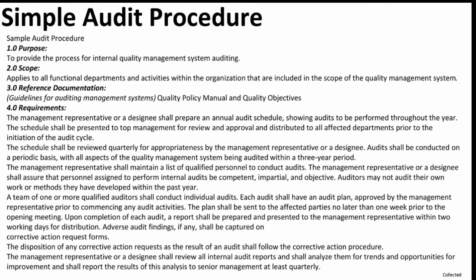This is a simple audit procedure. Its purpose is to provide the process for internal quality management system auditing. The scope is applied to all functional departments and activities within the organization that are included in the scope of the quality management system. References include the guideline for auditing management systems, the quality policy manual, and quality objectives.